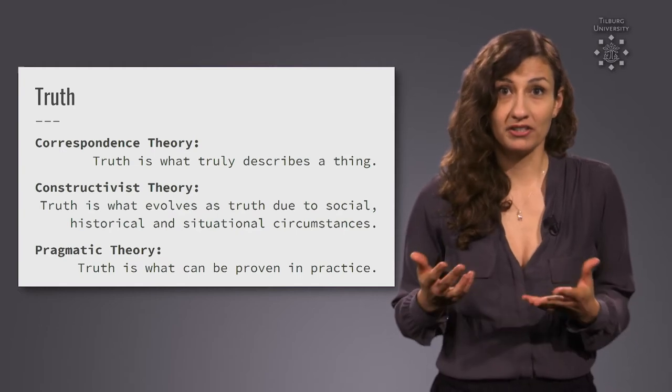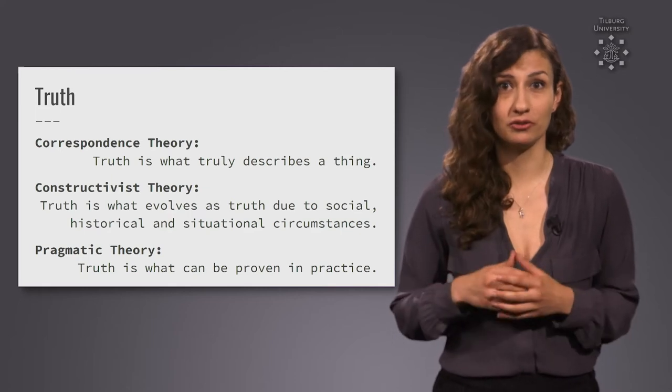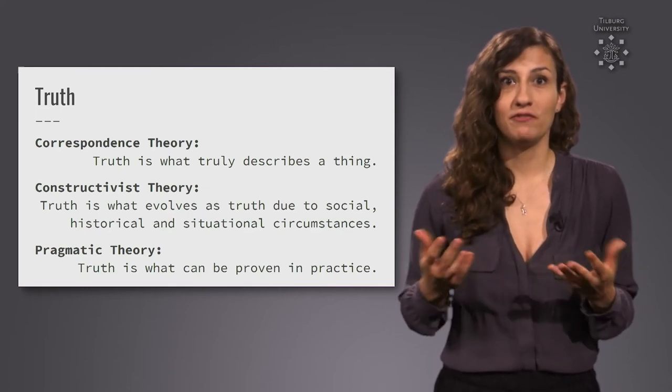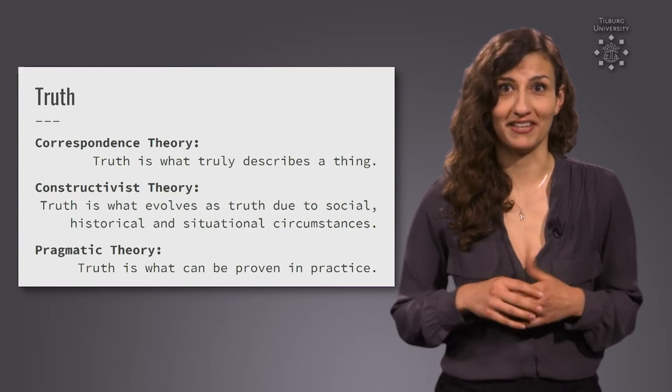In constructivist theory, truth is seen as determined by social, historical, and situational circumstances. This view suggests that we see truth through the lens of our society.